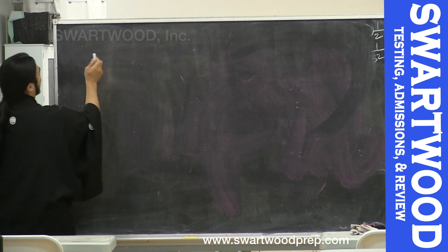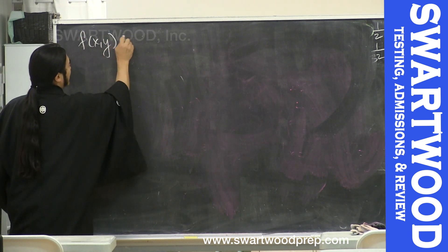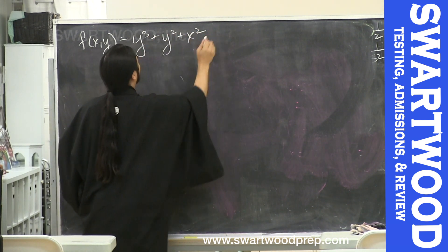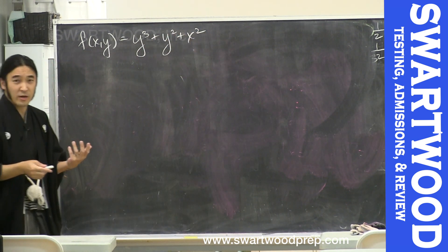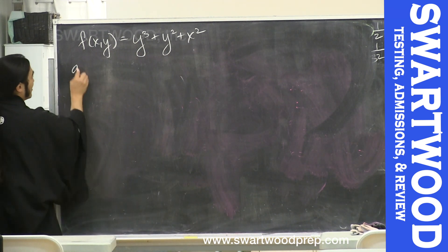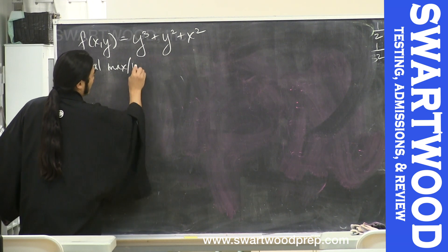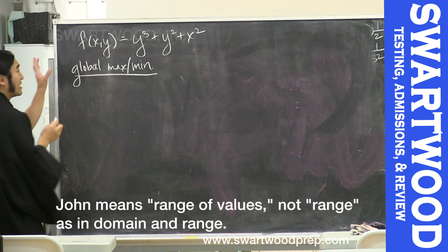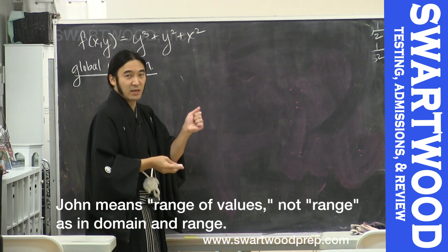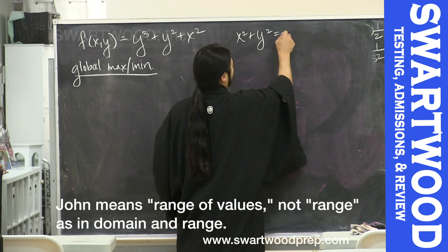For the exam, what do we need to know? Let's say we're given some function y cubed plus y squared plus x squared. Find the global max or the global min — not over the entire xy plane, but on a restricted domain.